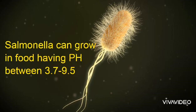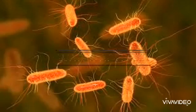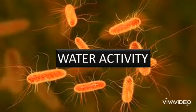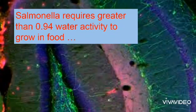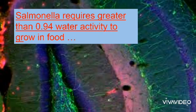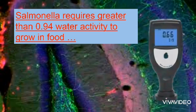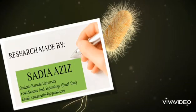Salmonella can grow in food having a pH between 3.7 and 9.5. Salmonella requires a water activity greater than 0.94 to grow in food. That covers the brief overview of Salmonella. We will bring the next video on another pathogen and cover the same basic aspects.